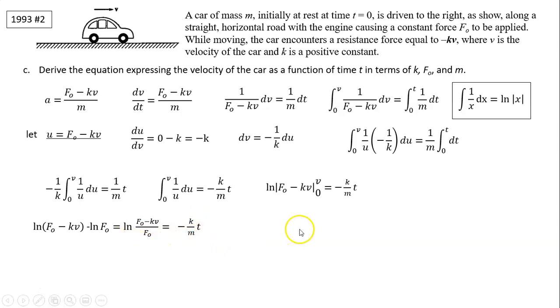So F0 minus kv divided by F0 equals negative k over m t. You raise to the power of e. So on the left, I switched it over here. This is e to the negative k over m t. And on the right side, e to the ln term is just that term. So it's F0 minus kv over F0. And from here, we can solve for v. You can solve it. Multiply F0 and combine the F0. Factoring it out, this is what you should have for v. That is the expression for velocity as a function of time of the car.